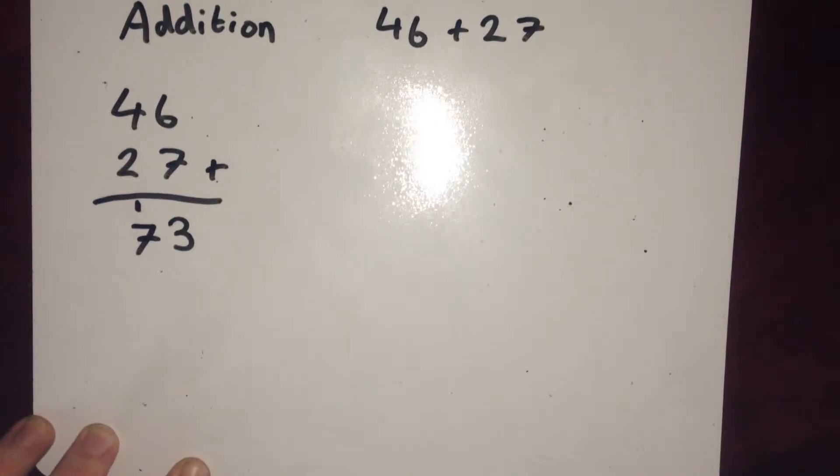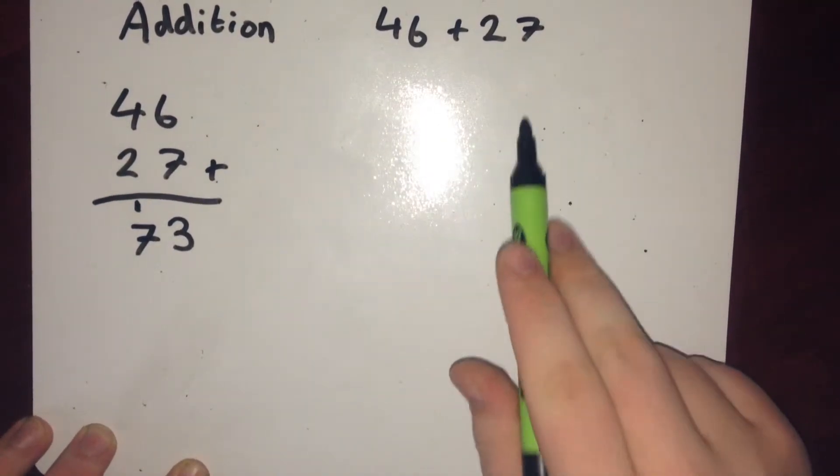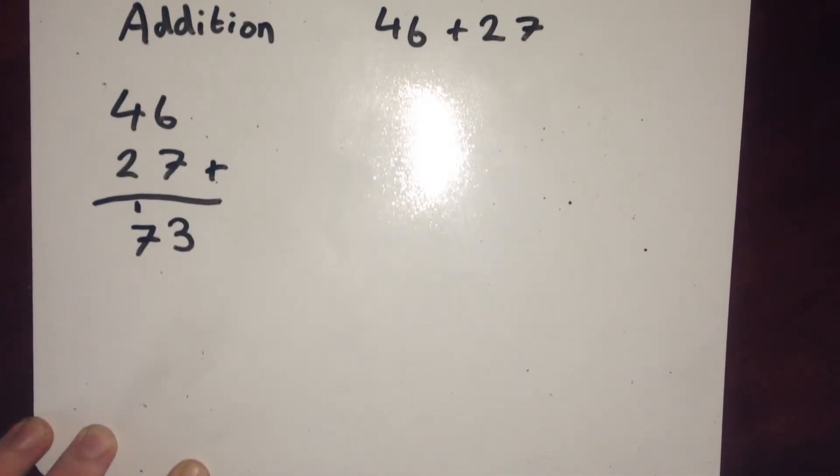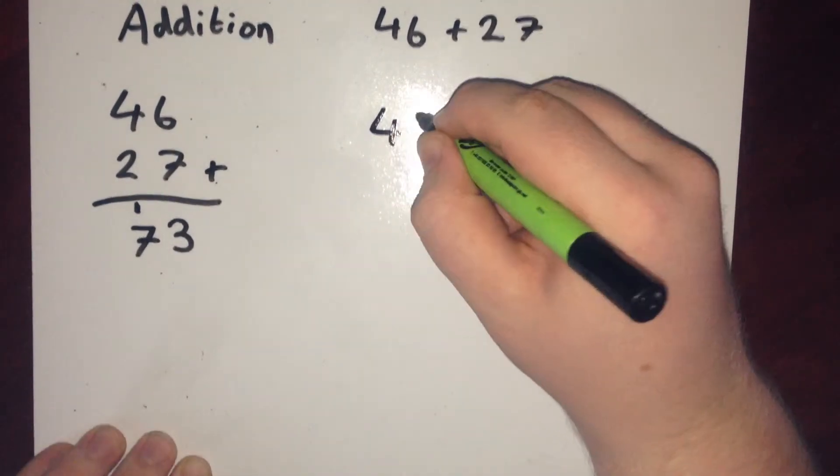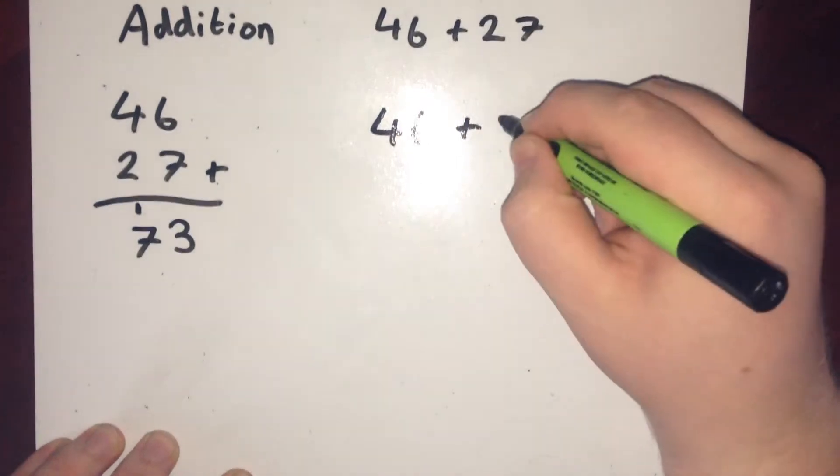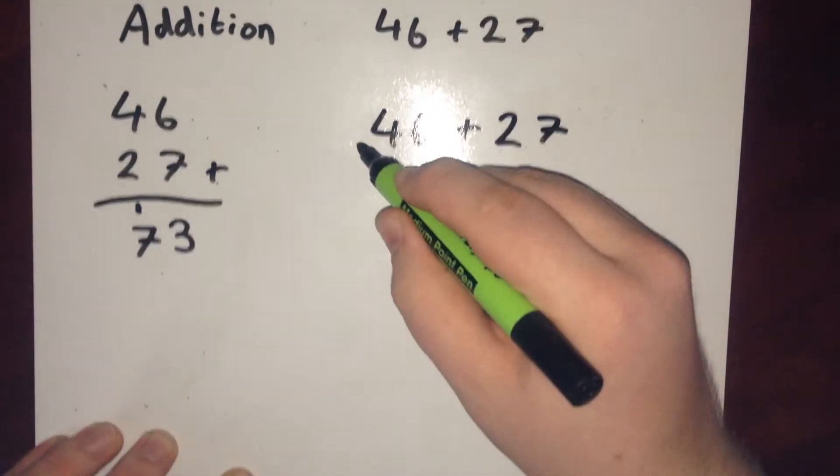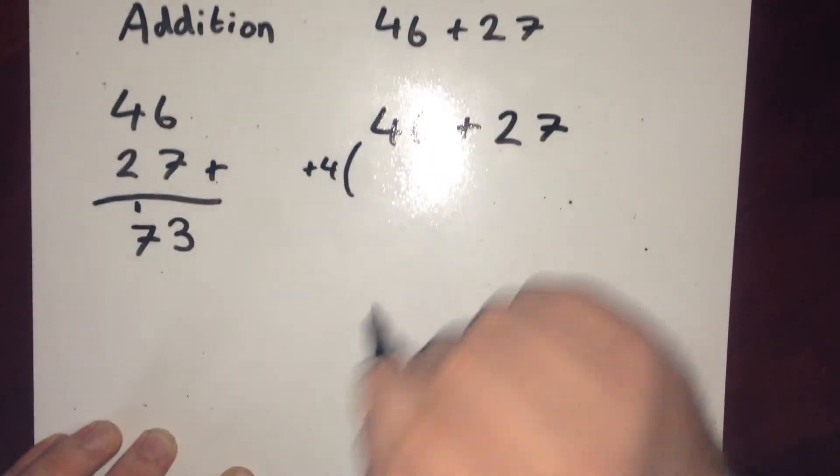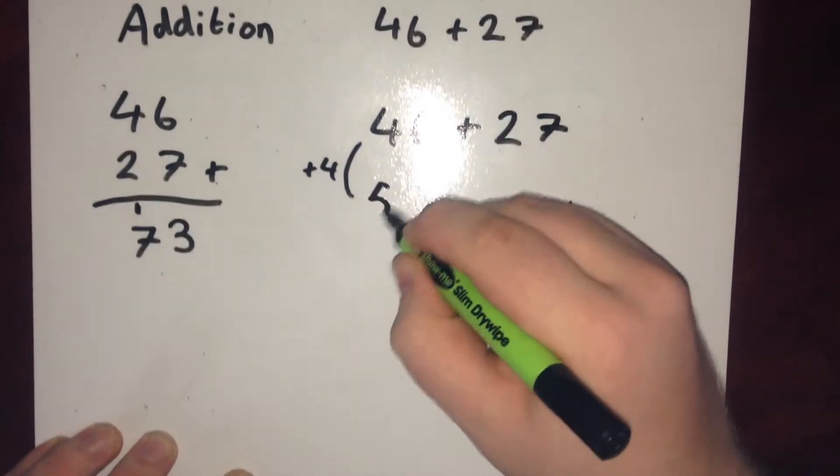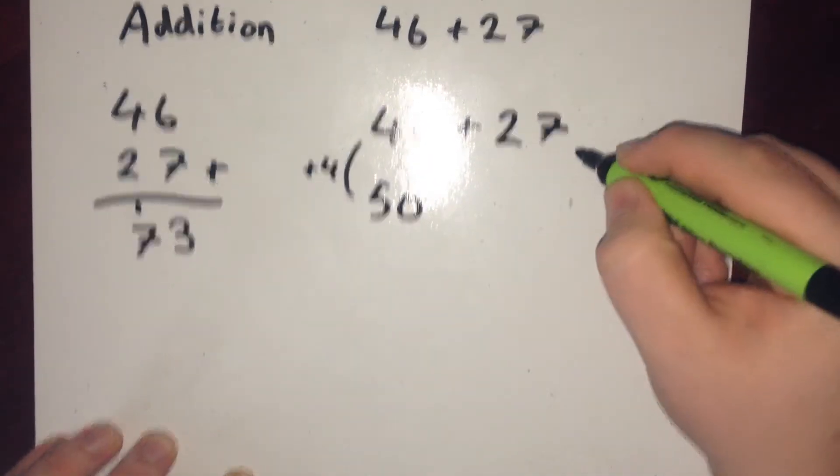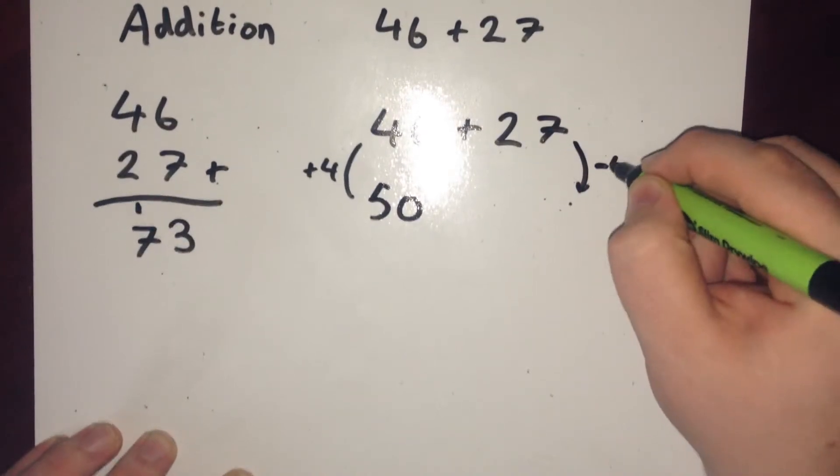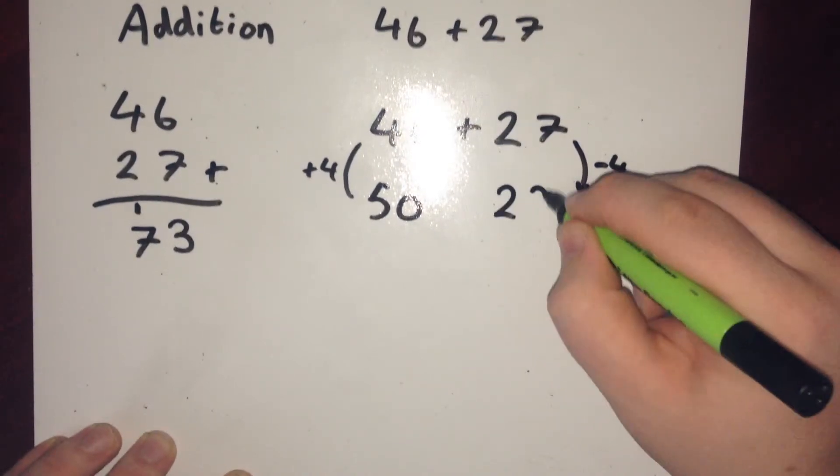This isn't the only method of adding two numbers together. I could add the 46 and the 27 and do it in parts, do it in bits. So I could start with 46 and add 27. And I might start just by adding 4 on. So that becomes 50. So I'm left with 23 on this side.